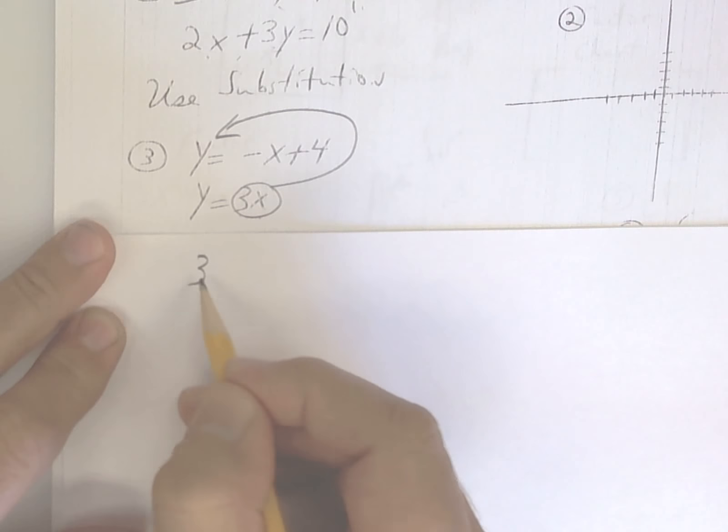So now I'm going to have 3x is equal to negative x plus 4. Draw my line. Add x. So I get 3 plus 1 makes 4x. I divide.